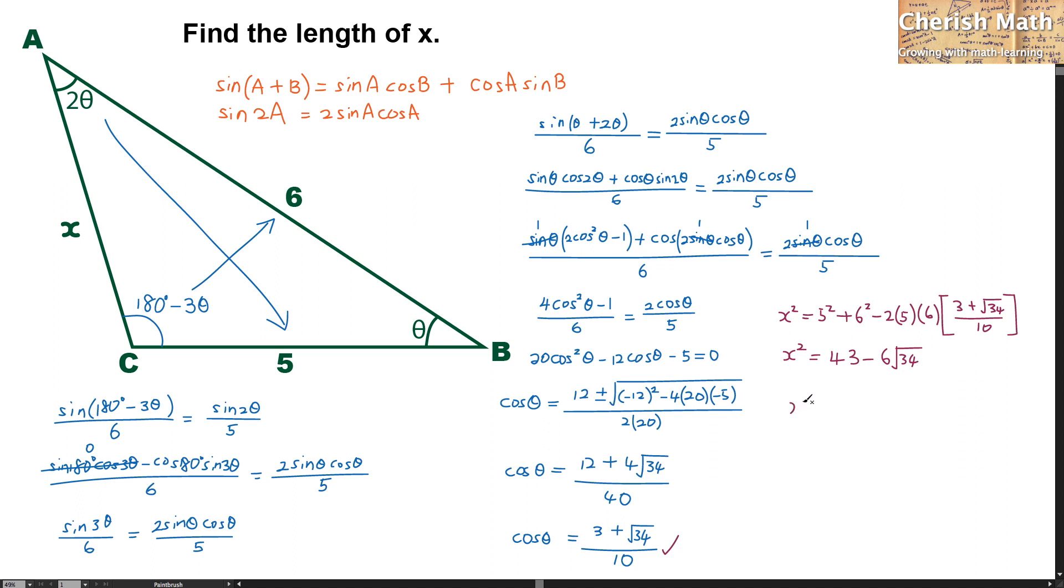And the value of the x here that I am getting is the square root of 43 minus 6 times square root of 34, and the value of the x is approximately 2.83 units. And this is the answer of the problem. Thanks for watching and please subscribe.